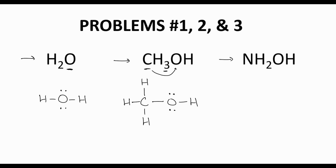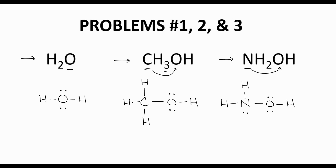Our last molecule on this slide is hydroxylamine. We immediately hit a second row element: nitrogen. It is attached to two hydrogens. This nitrogen is also attached to the next atom in the line, oxygen, which has a hydrogen. Nitrogen currently has three bonds — only six electrons — so it needs one lone pair to complete its octet. Oxygen has only four electrons in its two bonds, so it needs two lone pairs to get a complete octet.